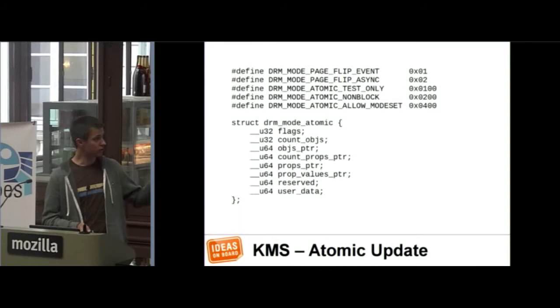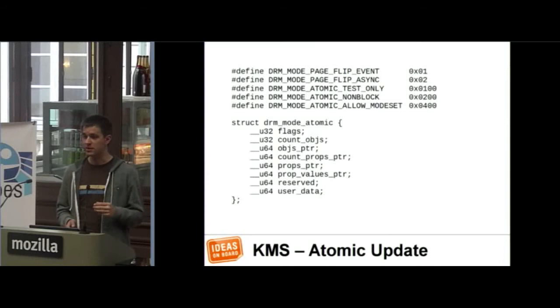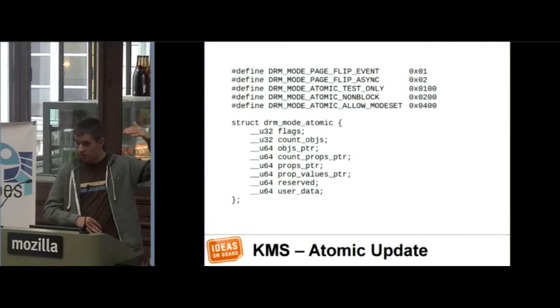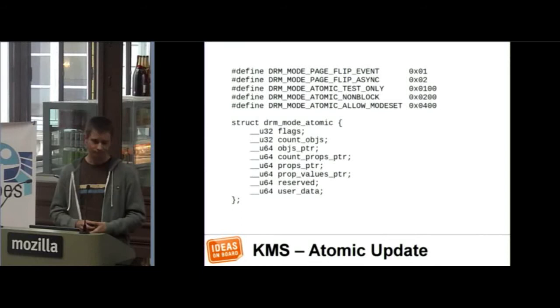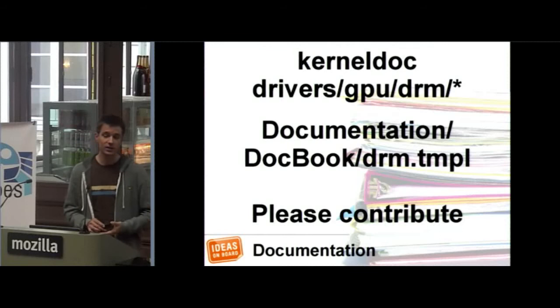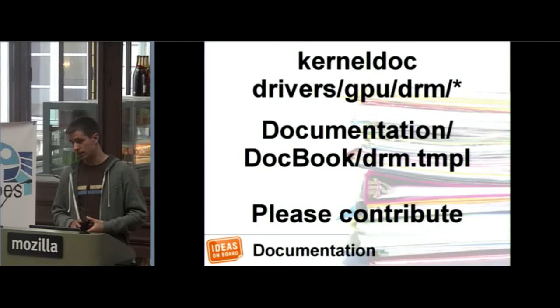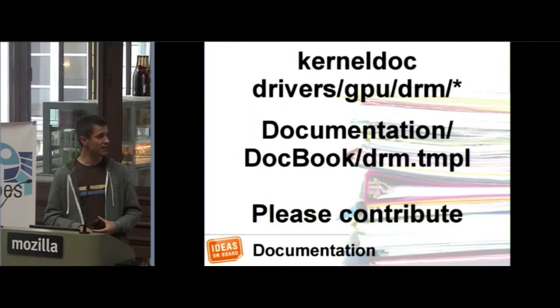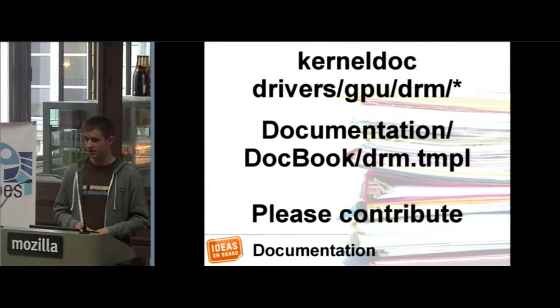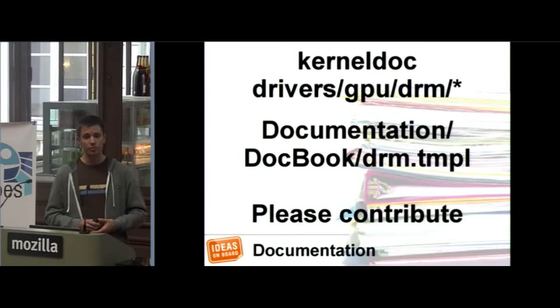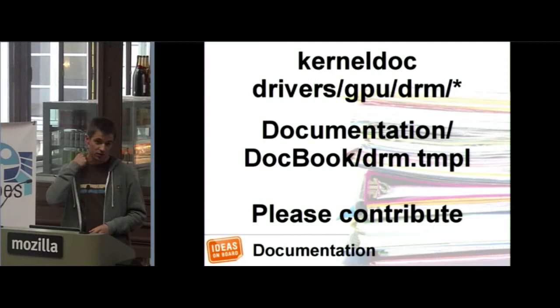For the atomic update, there's a structure that contains basically a list of objects and a list of properties. You can change a single property or all of them in a single go. There is documentation available in the kernel — kernel docs are the comments in the source code. A couple of years ago the documentation was quite sparse, but now we have much better documentation. Intel worked a lot on that and even contracted someone to enhance the kernel doc tools so we can write better documentation. There's also DocBook documentation in the kernel. The best way to make it even better is to contribute to it when you start working on graphics.